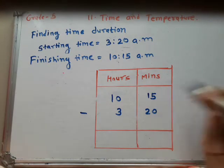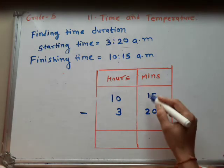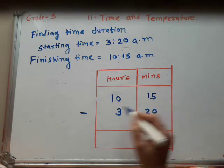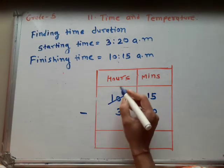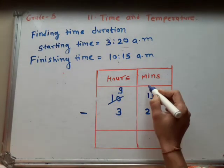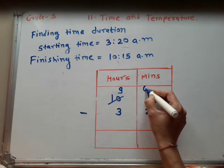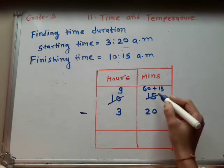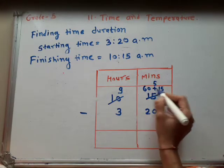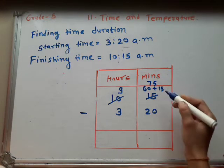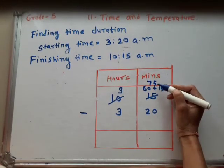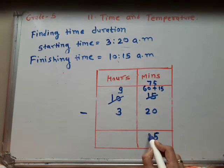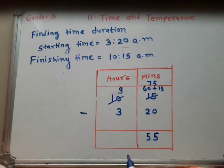Now we subtract. 15 minus 20 is not possible, so we borrow from 10. Here we get 9 hours. But 1 hour means 60 minutes, so 60 minutes are given to the minutes column. So 60 plus 15 minutes: 0 plus 5 is 5, and 6 plus 1 is 7 — we get 75 minutes. 75 minus 20: 5 minus 0 is 5, and 7 minus 2 is 5, so we get 55 minutes.